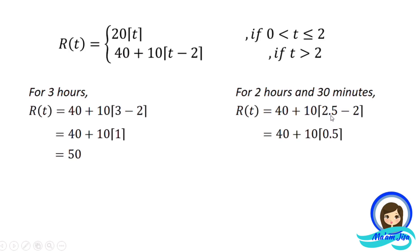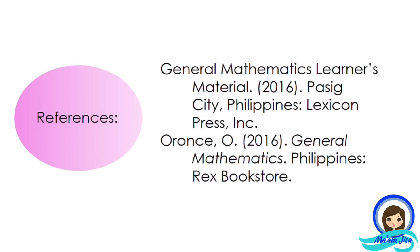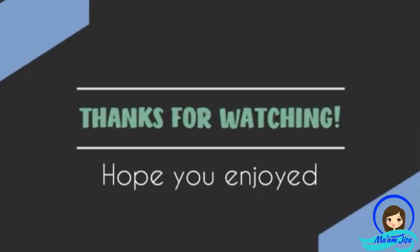Since the ceiling function applies, 0.5 is equivalent to 1 hour. Simplifying, the result is 50 pesos. So whether you use 3 hours or 2 hours and 30 minutes, you pay the same amount: 50 pesos. Here are some tips that might be helpful for you to represent piecewise functions. See you again in our next discussion.